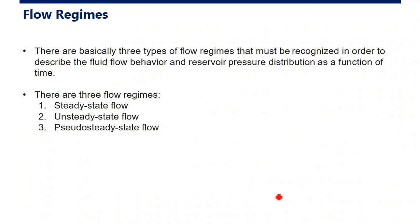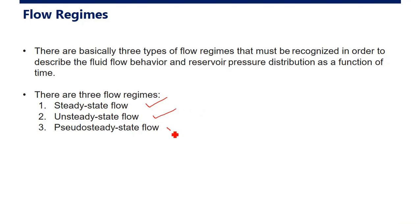Those are the four types of fluid. Now, for flow regime, there are basically three types we need to consider to describe fluid flow behavior and reservoir pressure distribution as a function of time: steady state, unsteady state (or transient) flow, and pseudo-steady state flow.